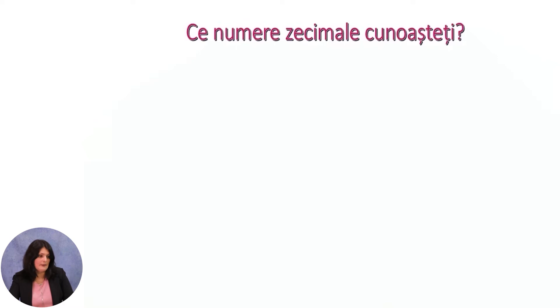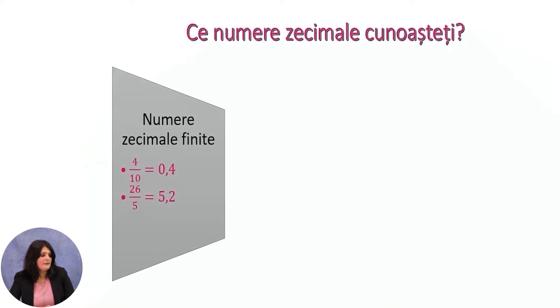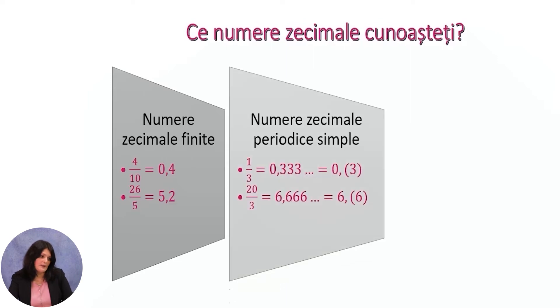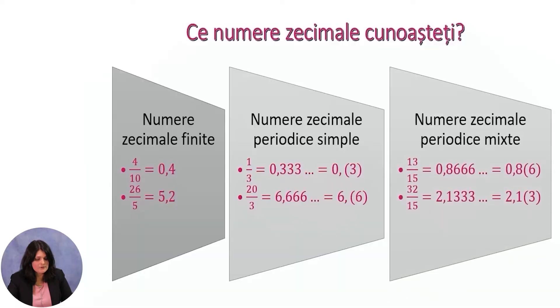What decimal numbers do we know? Finite decimal numbers are numbers that have a finite number of decimal places, for example 0.4 or 5.25. Numbers 0.(3) and 6.(6) represent simple periodic decimal numbers, with the period represented in parentheses. 0.3(85) and 6 in period is a mixed periodic decimal number, expressed by the integer part, the non-periodic part, followed by the period.